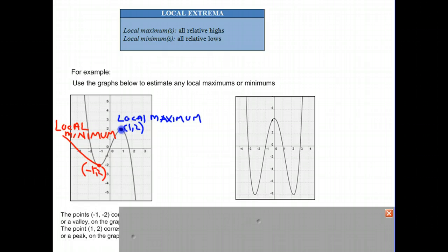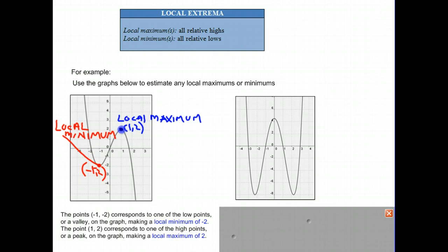Just to reiterate, the point negative 1, negative 2 corresponds to one of the low points or valley on the graph, making a local minimum of negative 2. And the point 1, 2 corresponds to one of the high points or peak on the graph, making a local maximum at 2.